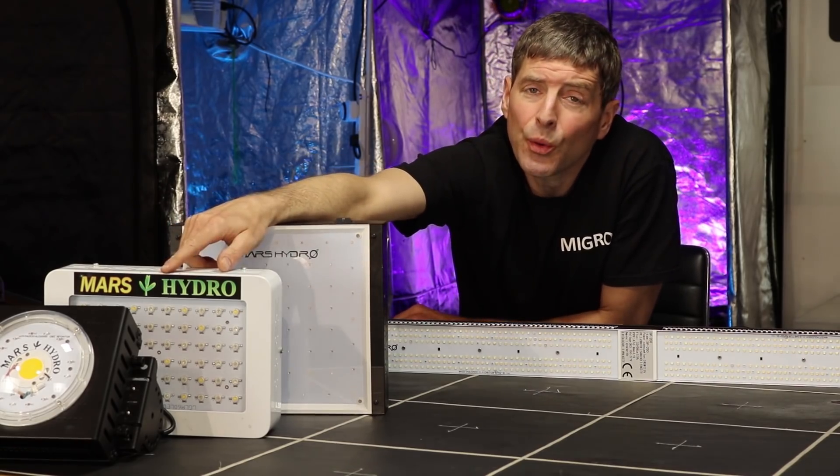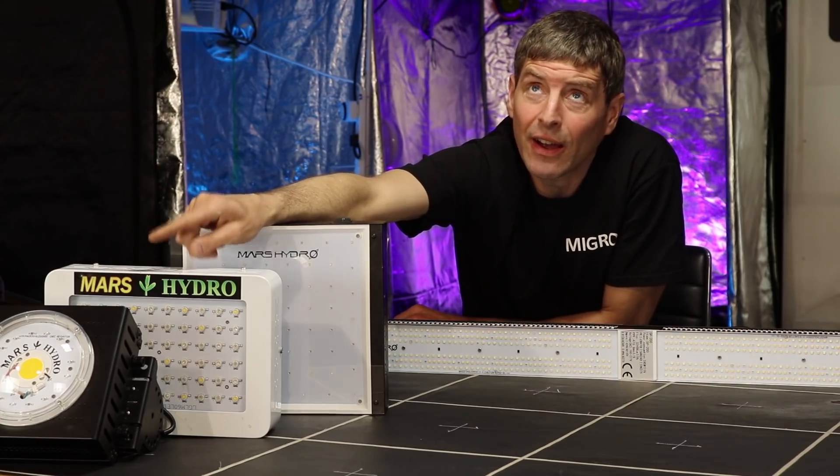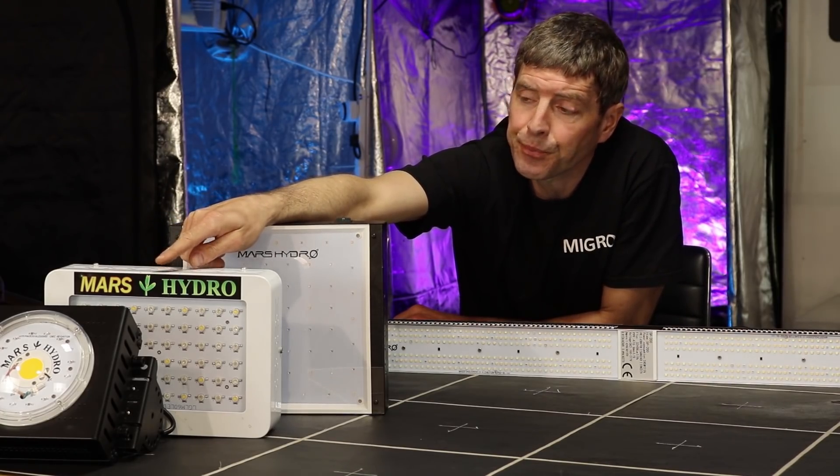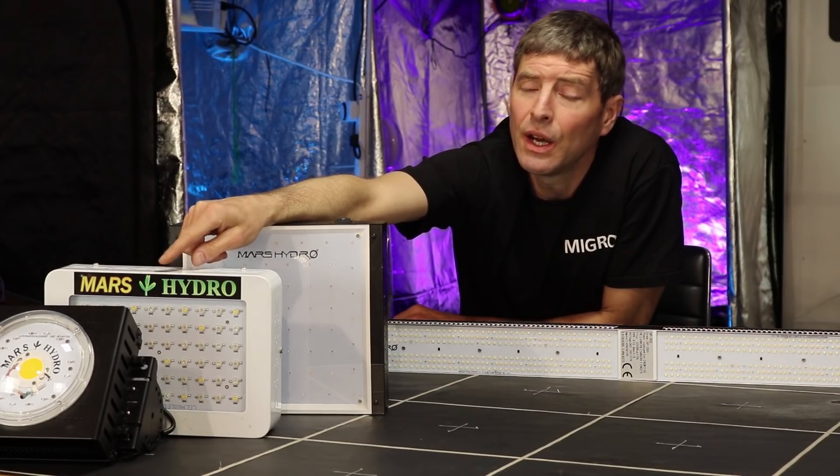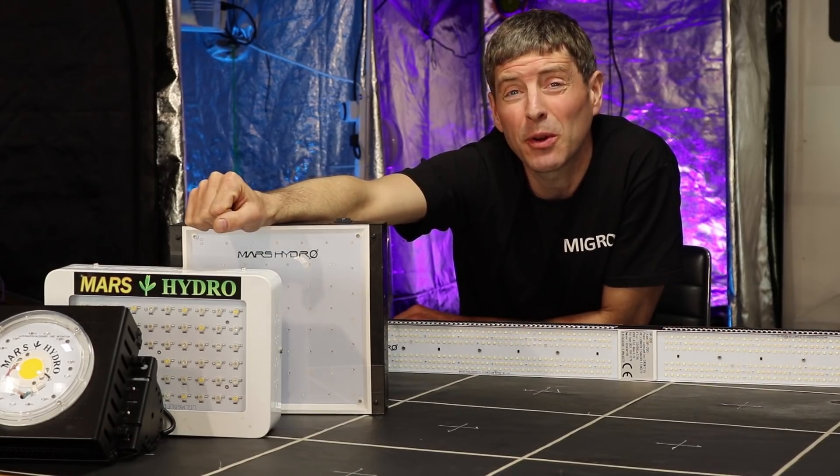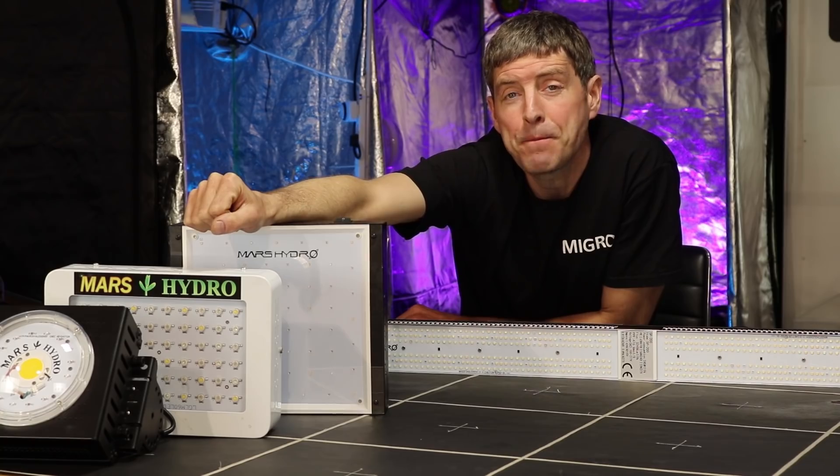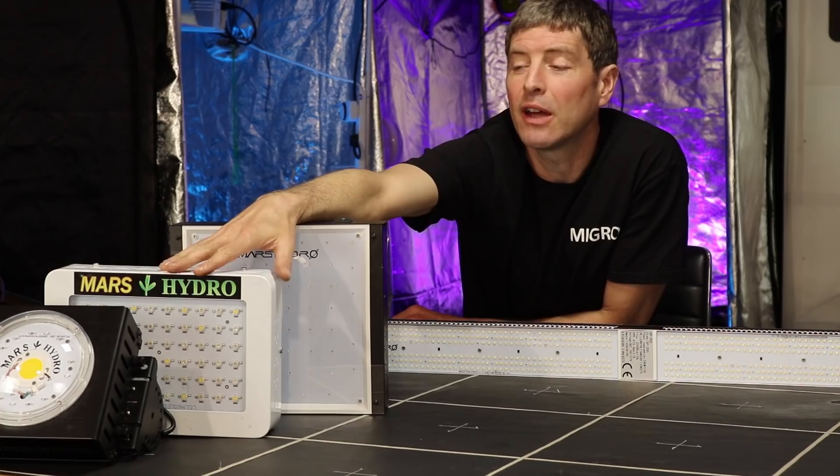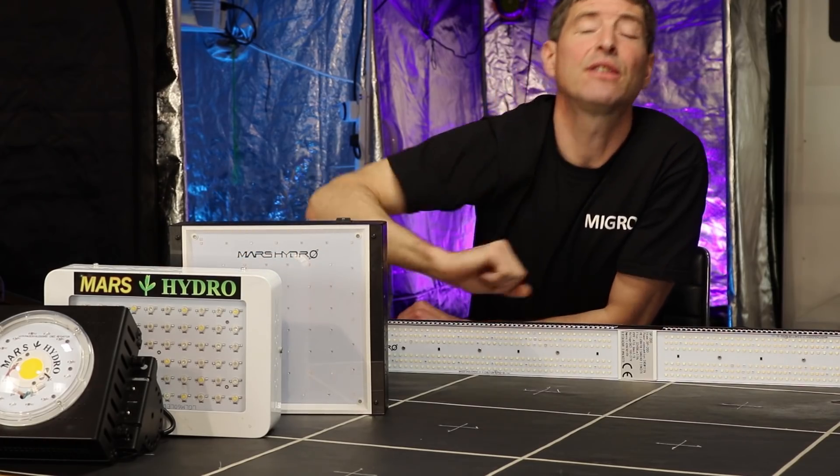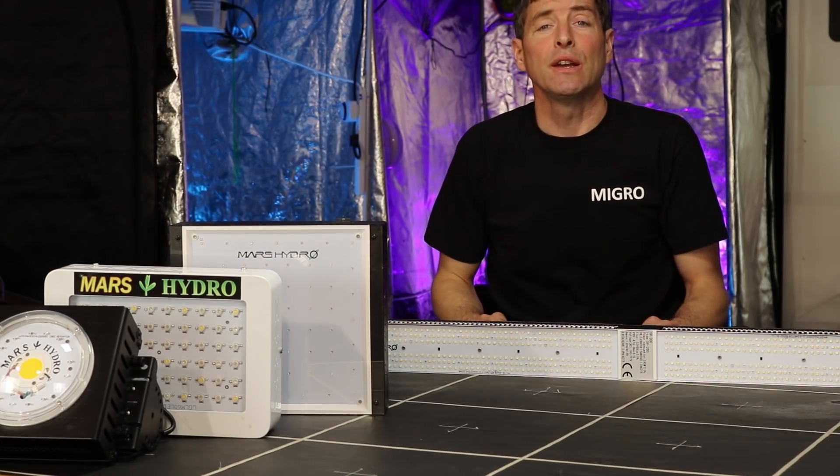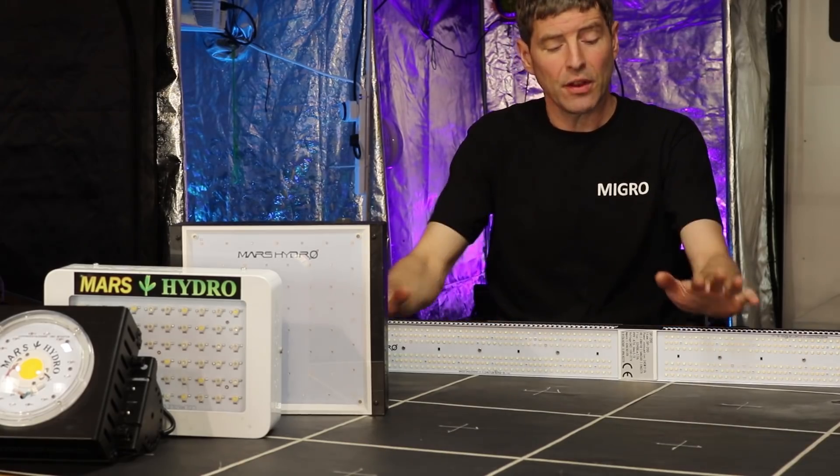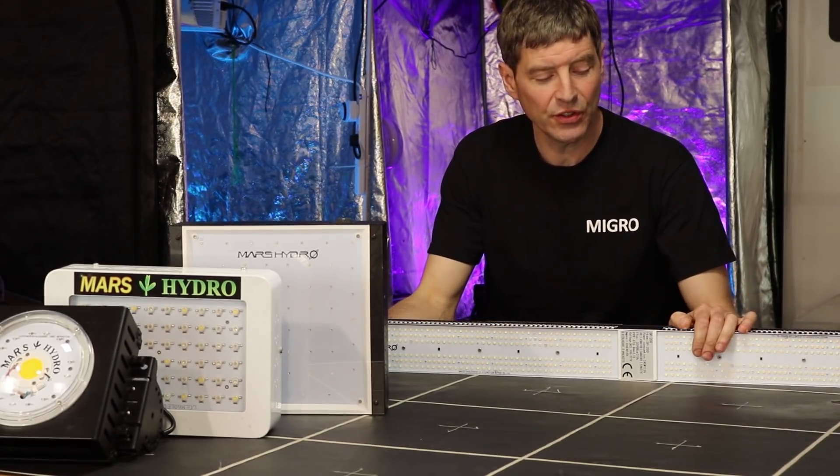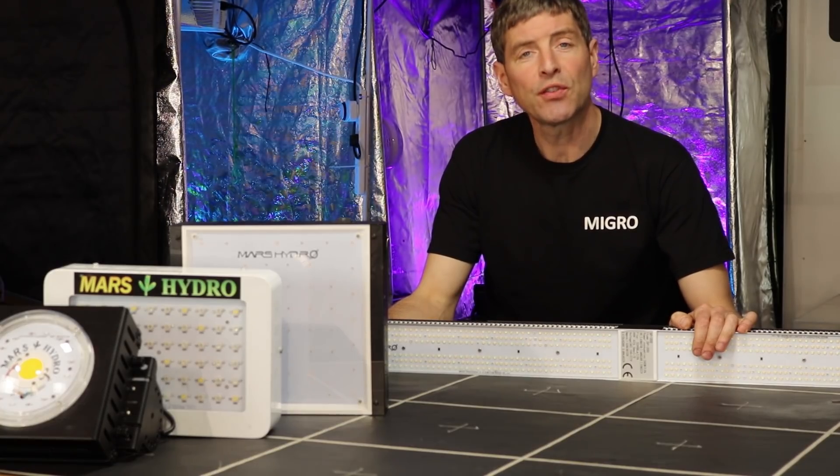The Mars Cob was or is or has been their best performing light thus far before the SP. It was 1.63 micromoles per watt efficiency and passively cooled as well. So they started getting away from the fan boxes with drivers attached to that. So it's been a steady progression. The new SP range, the 150 and 250, what's different about these?